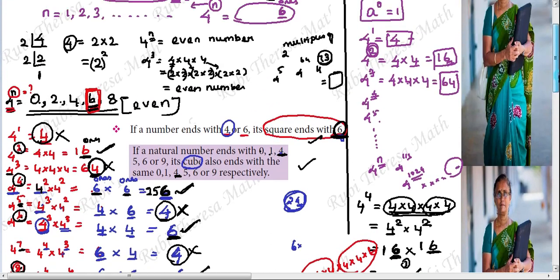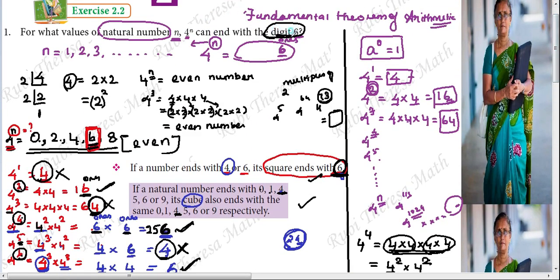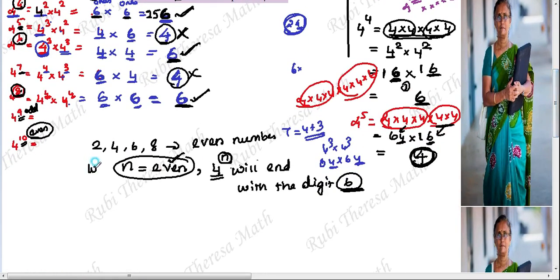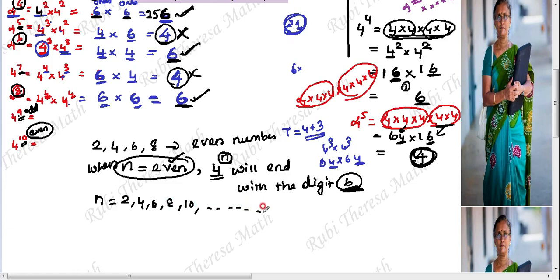Conclusion: when N is even, 4 power N will end with the digit 6. The possible values are N = 2, 4, 6, 8, 10, 12, and so on — all even numbers. This is your answer.